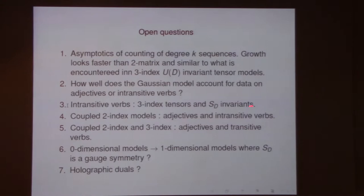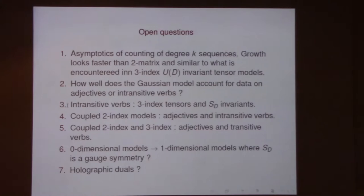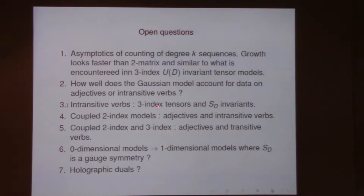It looks faster than two-matrix U(D) invariants, and somewhat similar to three-index U(D)-invariant tensor models — they probably might be in the same universality class. There are also computational linguistic questions: how well does this Gaussian model account for data? You could do it with adjectives or intransitive verbs. Over dinner, Antalo was asking about the use of the two-matrix model — potentially if you want to study the statistics of adjectives and verbs simultaneously, you could have one type of matrix for adjectives and one for verbs. This is a playground for multi-matrix models.